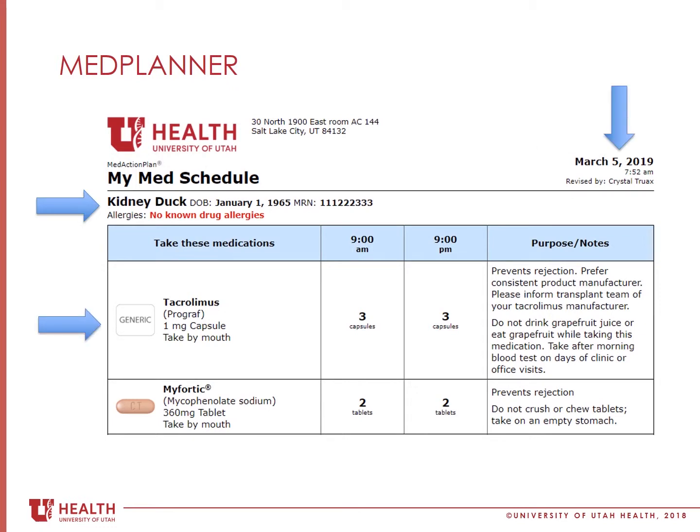At the top of the med planner, your name, date of birth, and allergies will be listed. Additionally, there is a date on the top right-hand corner. If you ever end up with multiple copies of this med planner, make sure you are following the most up-to-date version.